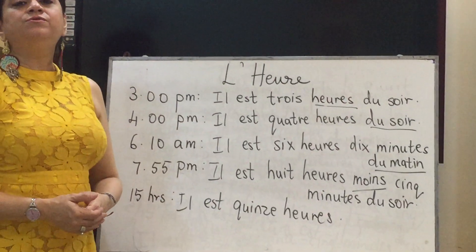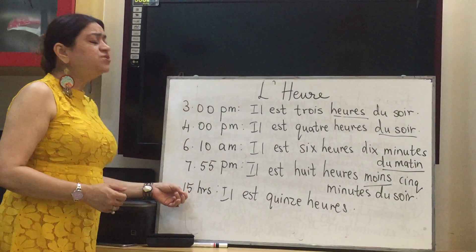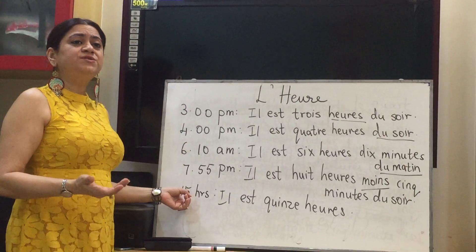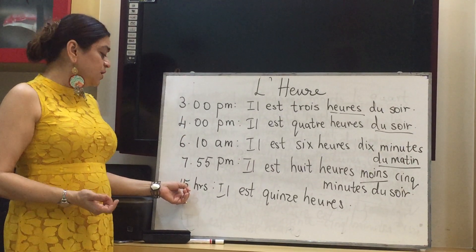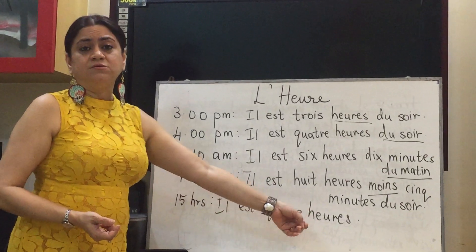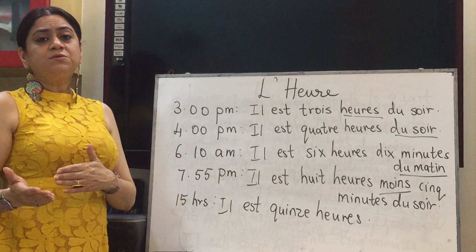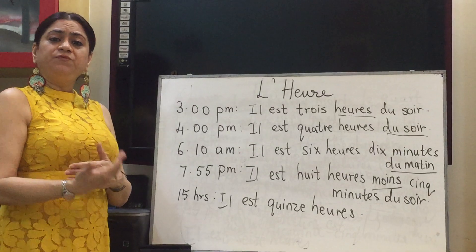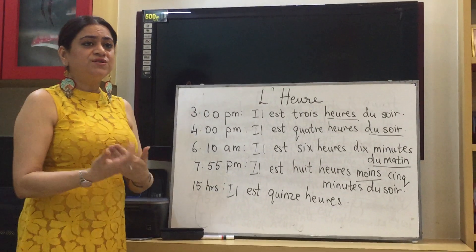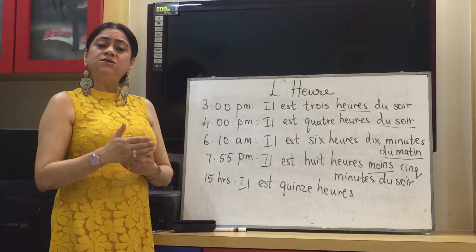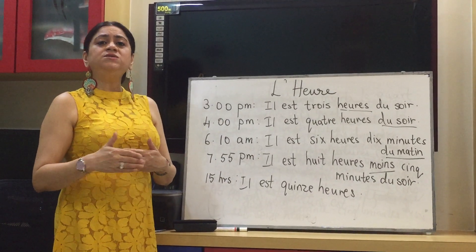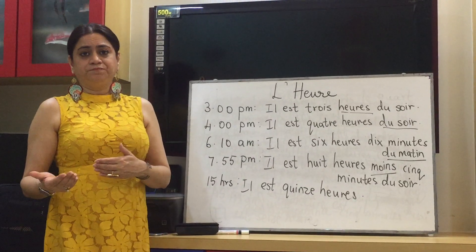For digital time, just like in any language, you write it as 15 hours, 16 hours, etc. So if it is 15 hours, you say 'il est quinze heures' — written as du soir, saying it as it is P.M. If it is 16 hours, you write 'il est seize heures,' and 17 hours is 'il est dix-sept heures.'